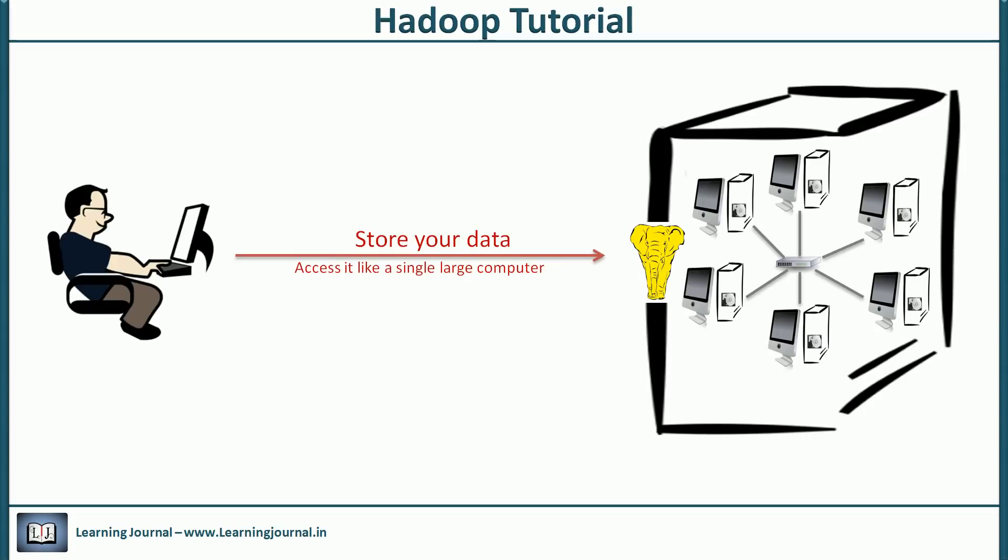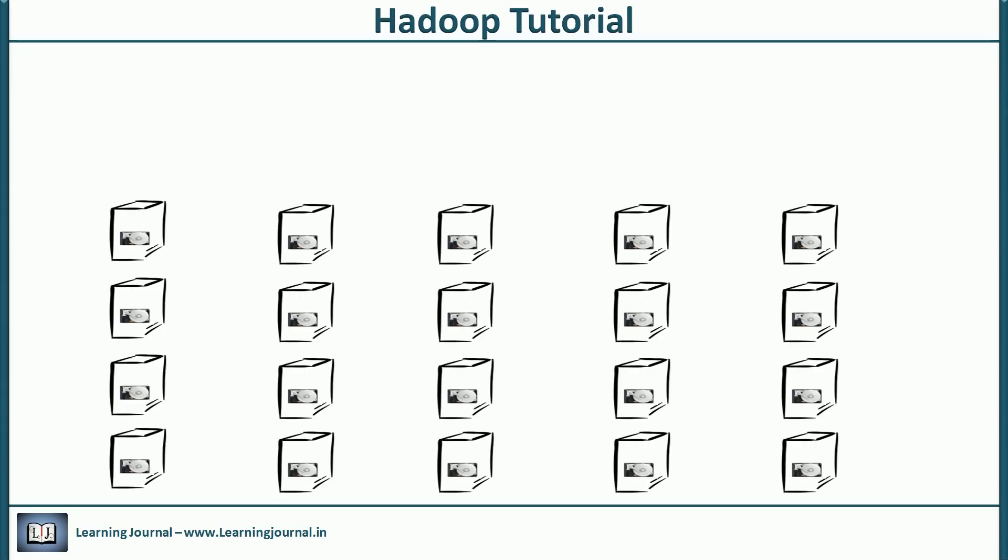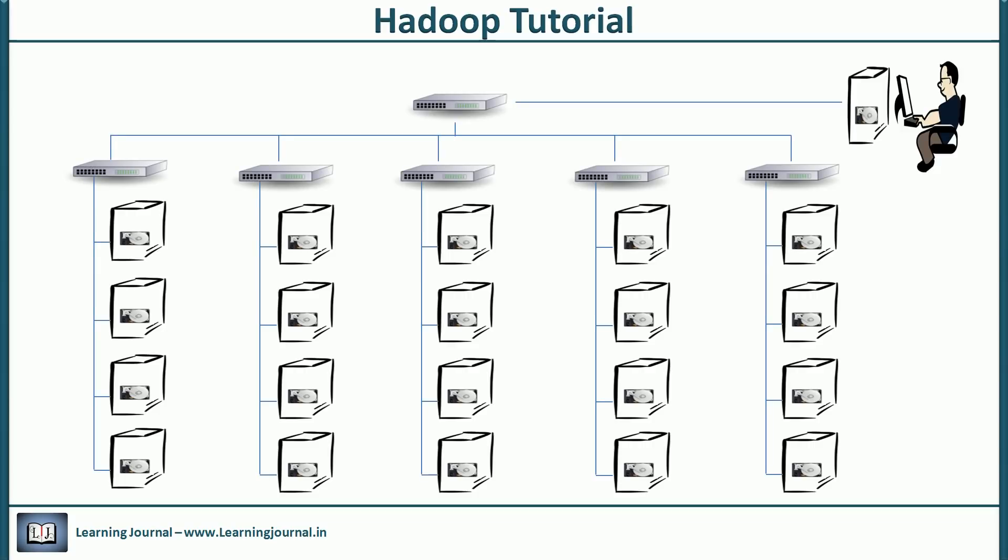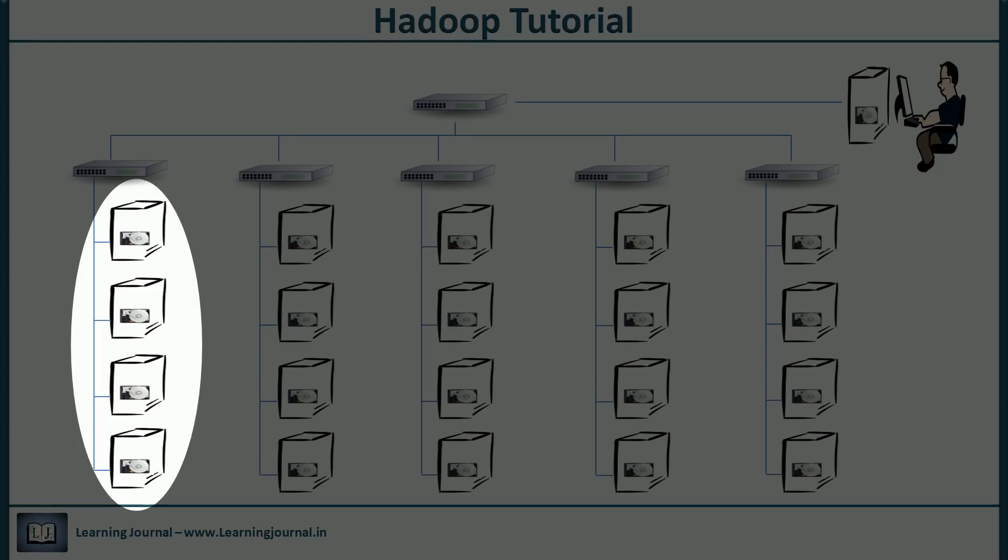We already know that HDFS is a distributed file system. So the first thing that comes to my mind is a bunch of computers. We need to network them together and form a cluster. So this is how a simple but typical Hadoop cluster is networked. This one column of computers is called one rack. The term rack is important because there are few concepts associated with the rack. So let me explain the rack.